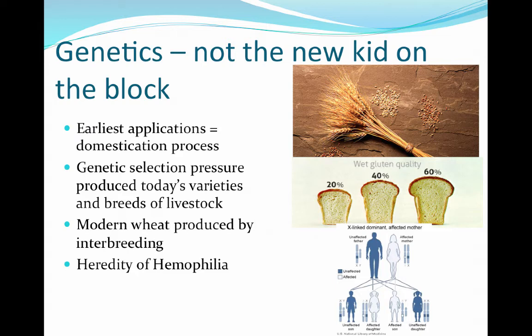Another instance where genetics has played a role is in identifying individuals with hemophilia. The Russian royalty line was actually killed off because they had a sex-linked gene for hemophilia that was passed from mother to offspring. Hemophilia means that anytime you experience any type of trauma like a cut or puncture, the clotting factors in the blood are not there because the gene in the DNA is not there to make the clotting factors. So that individual, unfortunately, tends to just bleed out and die.